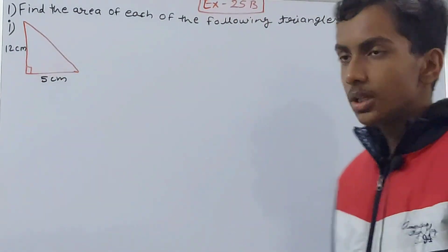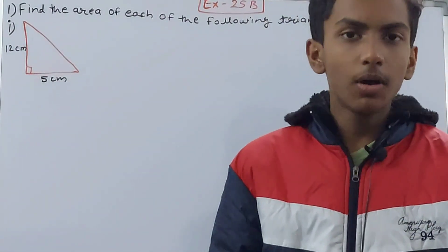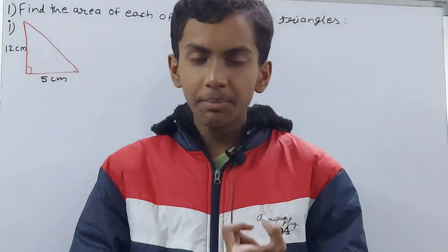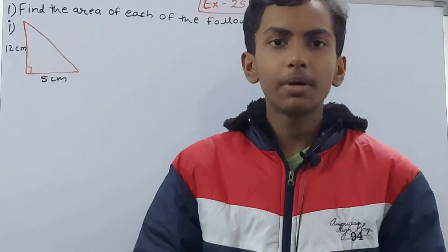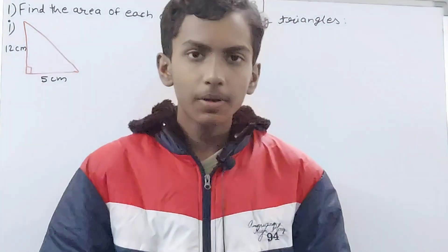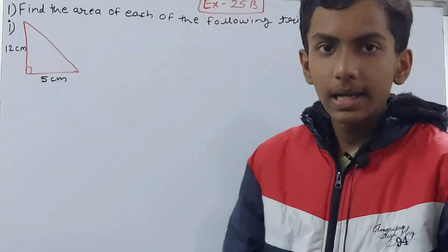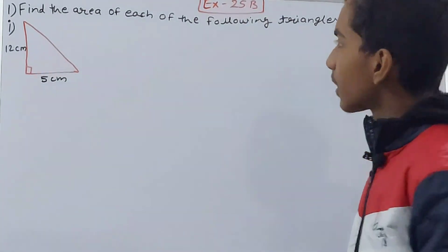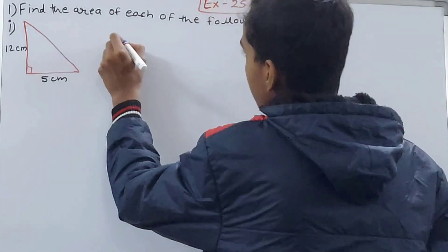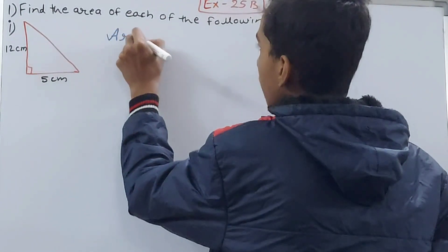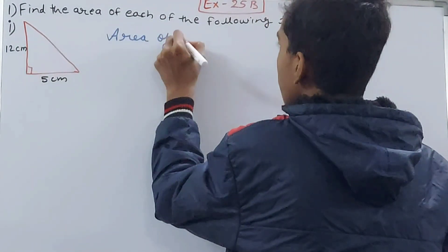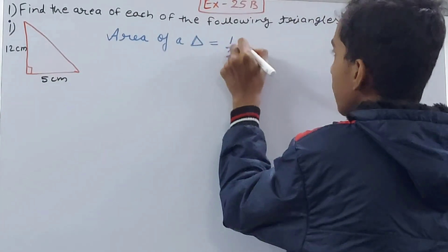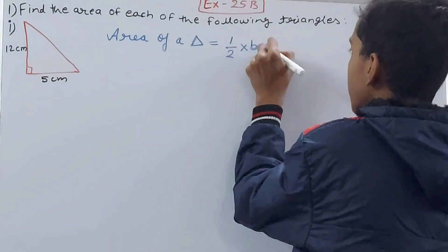The question asks us to find the area of each of the following triangles. Till now we have learned area and perimeter of square, area and perimeter of rectangle, and diagonal of square and diagonal of rectangle. Now we are going to learn the area of a triangle. The formula for area of a triangle is: 1/2 multiplied by base multiplied by height.